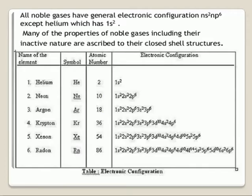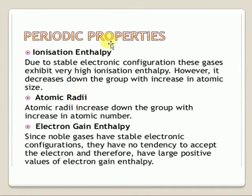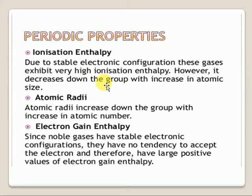These are the general electronic configurations of noble gas elements. Next, the periodic properties. Certain properties we will discuss in detail. Ionization energy: the amount of energy required to remove an electron is called ionization energy. Generally noble gas elements have the highest ionization energy because of their stable electronic configuration.